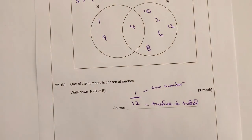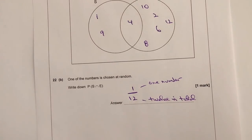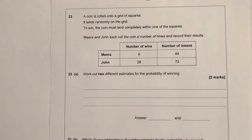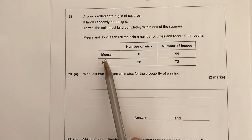So let's have a look then at a little bit more. I think this is also a probability as well. Slightly different because this time we've got a grid of information to deal with. So a coin is rolled onto a grid of squares. It lands randomly. To win, the coin must land completely within one of the squares. Mira and John each roll the coin a number of times and record their results. So work out two different estimates for the probability of winning.